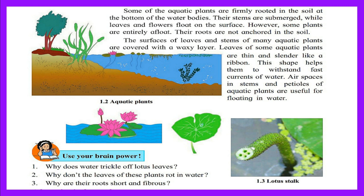Some aquatic plants are firmly rooted in the soil at the bottom of water bodies; their stems are submerged while leaves and flowers float on the surface. However, some plants are entirely afloat — their roots are not anchored in the soil. The surface of leaves and stems of many aquatic plants are covered with a waxy layer. Leaves of some aquatic plants are thin and slender like a ribbon, which helps them to withstand fast currents of water. Air spaces in stems and petals of aquatic plants are useful for floating in water.